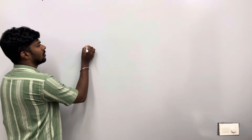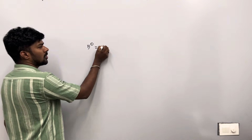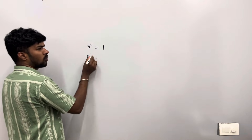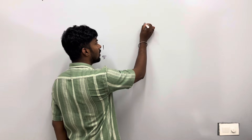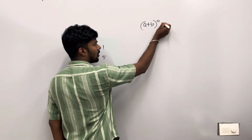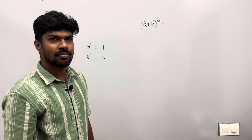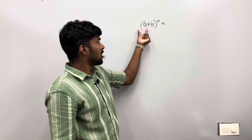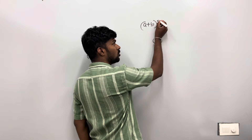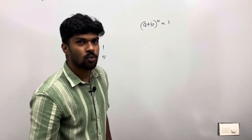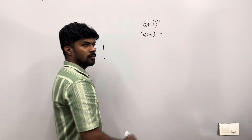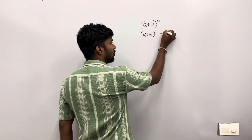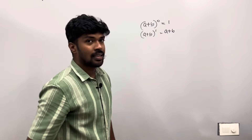I'll teach you how to do it. Let's say we have a problem. One number is 0, one number is 1. A plus B whole raised to 0 — the answer is 1. A plus B whole raised to 1 — that is one one, that is the answer.